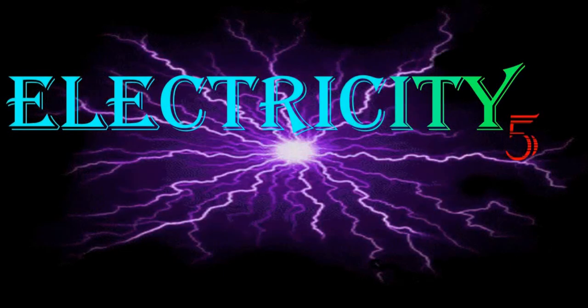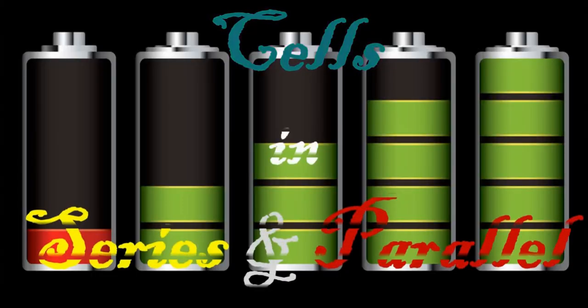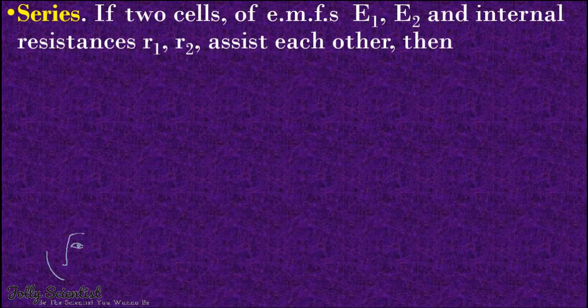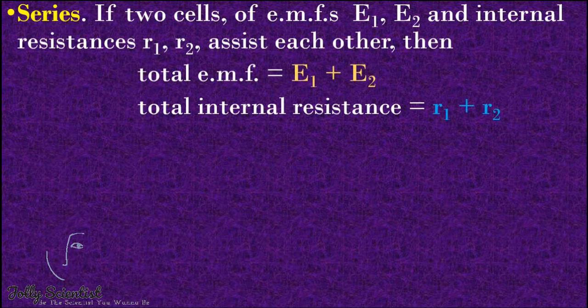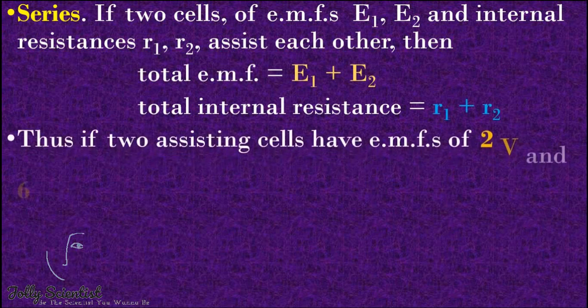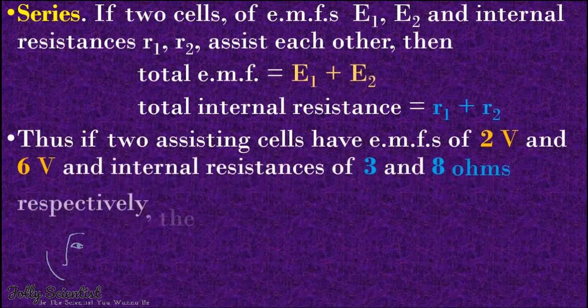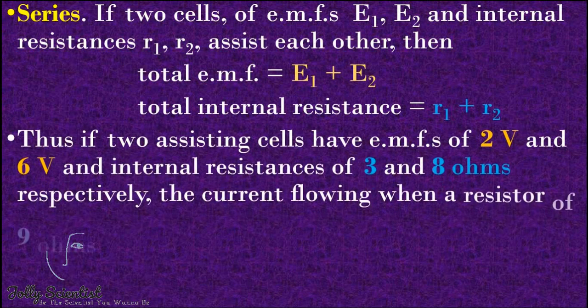In a series connection, given two cells of EMFs E1 and E2 and internal resistances R1 and R2 that assist each other, the total EMF equals E1 plus E2 and the total internal resistance equals R1 plus R2. For example, two assisting cells have EMF of 2V and 6V and internal resistances 3Ω and 8Ω respectively.